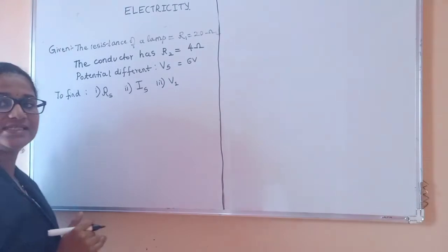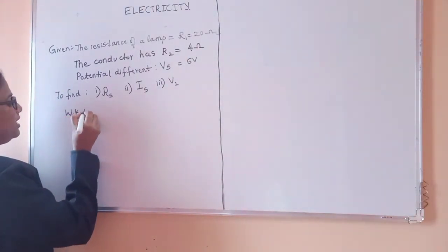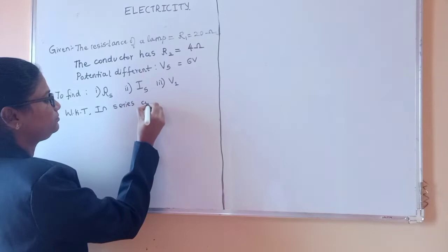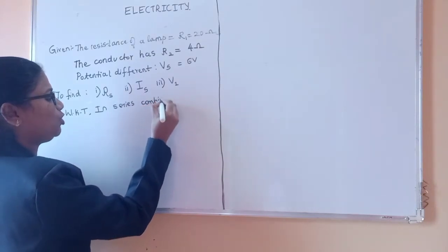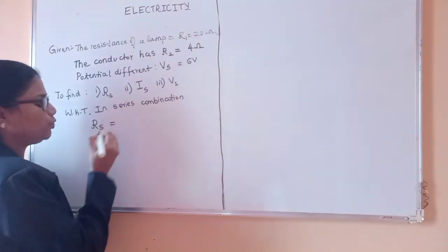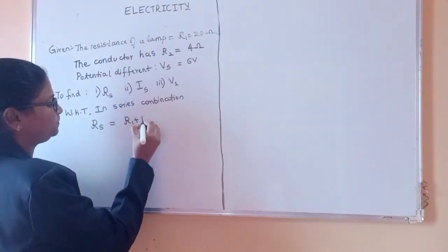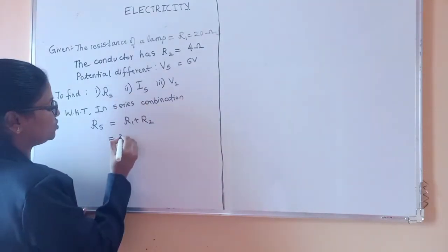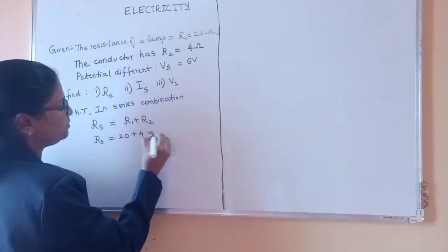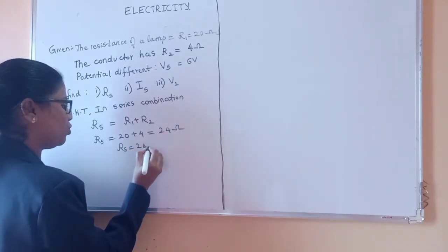So first let us solve for resistance in series. We know that in series combination, the total resistance Rs is equal to sum of resistances, that is R1 plus R2. What is R1 here? It is 20. What is R2? It is 4. So the resistance in series will be 24 ohm.